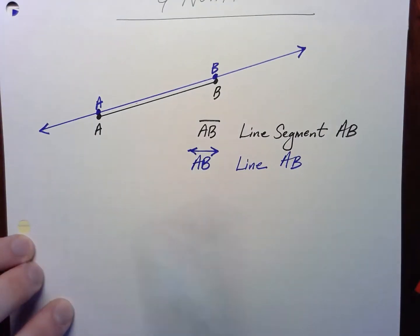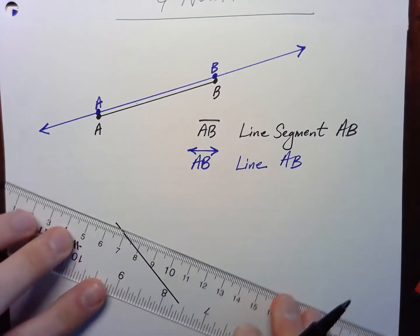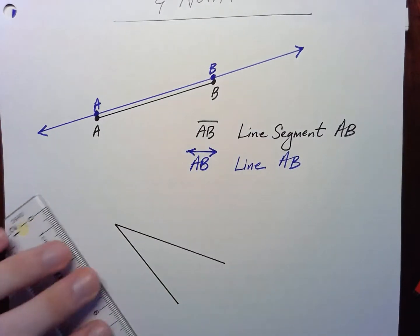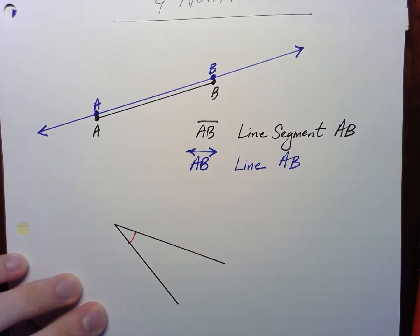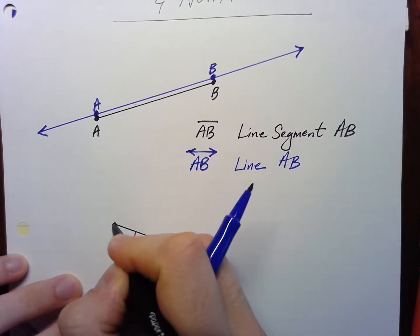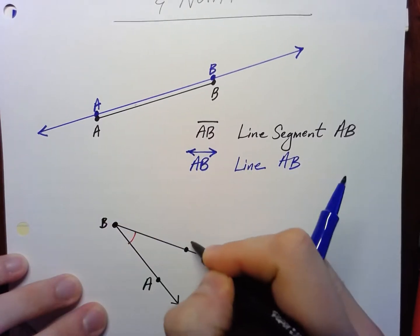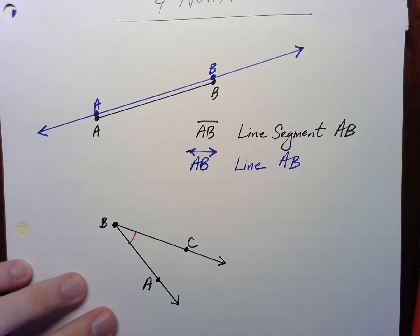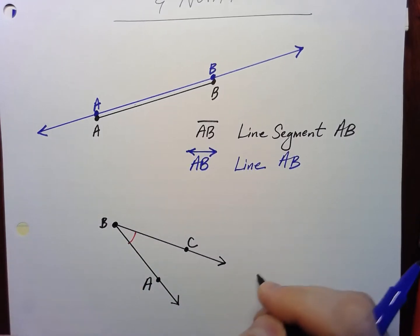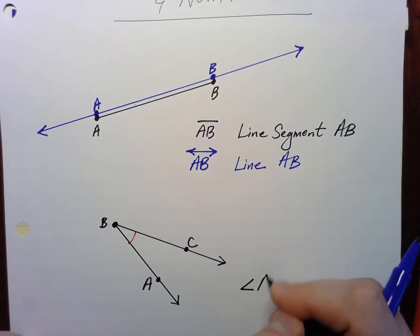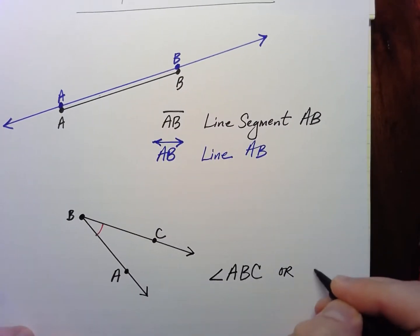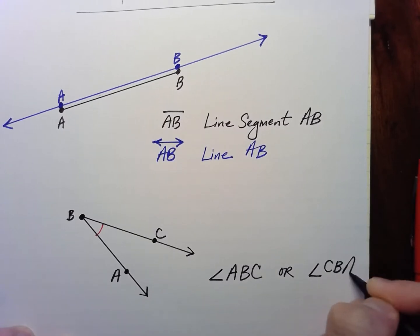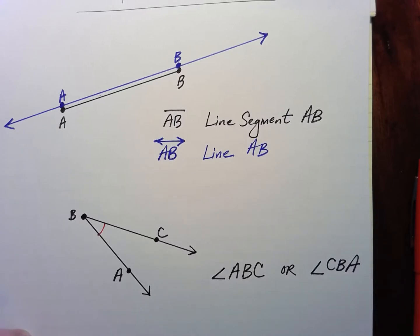Let's talk about angles. So let's say that we had some angle here. We have some angle and these are rays going on forever, and we have some points here. Let's say this is called A, B, C. The angle itself — the object itself — the angle is ABC. Or that would be the same as writing angle CBA.